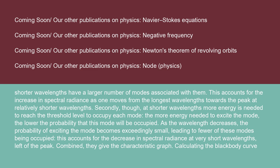Secondly, at shorter wavelengths more energy is needed to reach the threshold level to occupy each mode. The more energy needed to excite the mode, the lower the probability that this mode will be occupied. As the wavelength decreases, the probability of exciting the mode becomes exceedingly small, leading to fewer of these modes being occupied. This accounts for the decrease in spectral radiance at very short wavelengths — left of the peak. Combined, they give the characteristic graph.